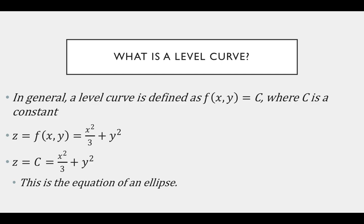So we take this paraboloid — this function of two variables that z is equal to — and we set it equal to a constant. Without even thinking about what this means, we can see that we have the equation of an ellipse. If you divide the entire equation through by c, you get x²/3c + y²/c, which is obviously the equation of an ellipse.